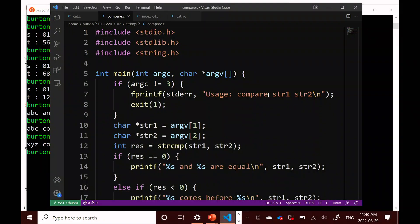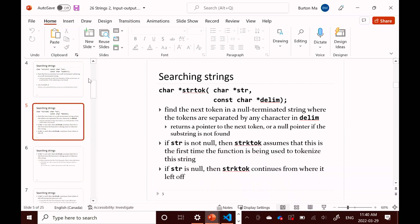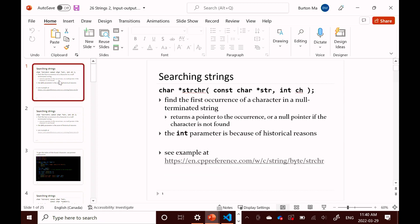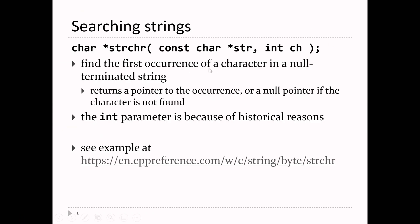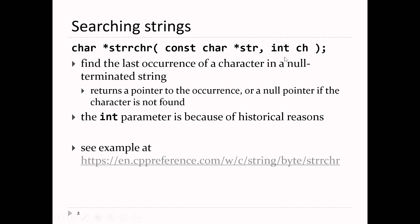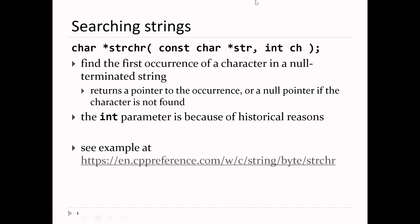There are more string functions we need to talk about. You can also search strings. strchr finds the first occurrence of a character ch inside a string str. It returns a pointer to the location of that character, assuming it exists in the string — if it doesn't exist, it returns null. The parameter is int rather than char for historical reasons, since this is one of the first functions in the C standard library, from when it was common to use ints to store character values.